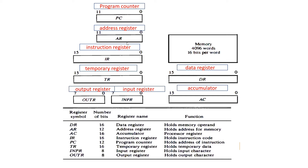And AC register is also going to have 16 bits. AC register is nothing but accumulator. The main purpose of the accumulator is that after performing some logical or mathematical operations in ALU, the data is going to be stored in the accumulator.